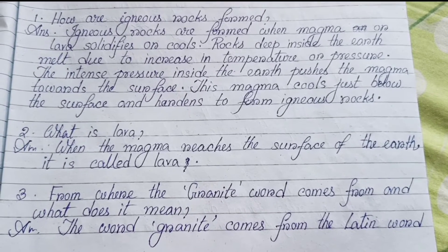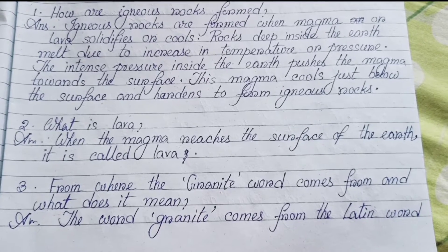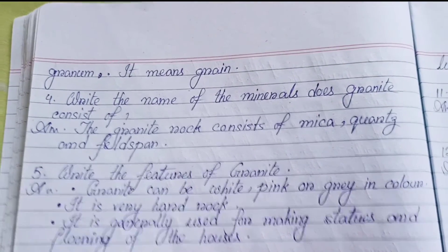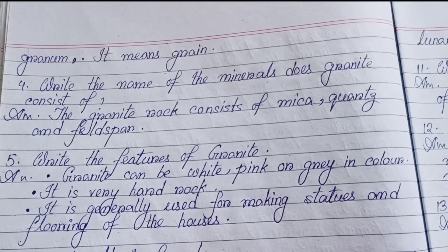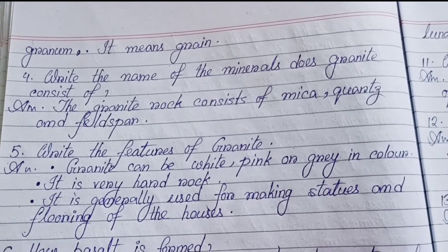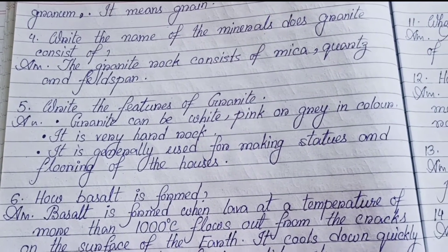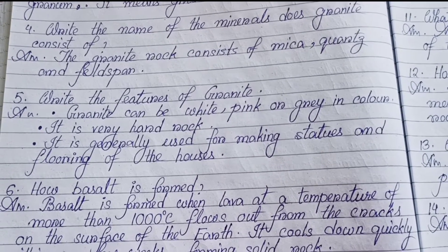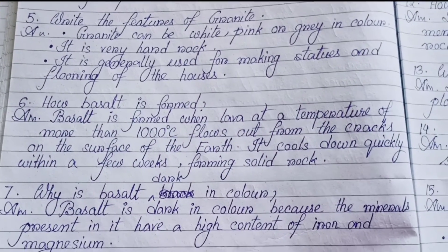Number three: Where does the word granite come from and what does it mean? The word granite comes from the Latin word 'granum', meaning grain. Number four: What minerals does granite consist of? Granite consists of mica, quartz, and feldspar. Number five: Features of granite — Granite can be white, pink, or gray in color. It is a very hard rock, generally used in making statues and flooring of houses.